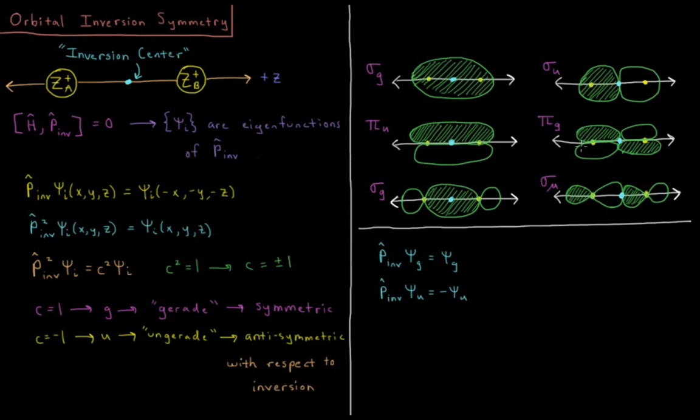For this combination of a pi orbital, I go inverting through there, positive to positive, negative to negative, everywhere I go. So this is a gerata pi orbital.